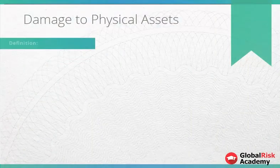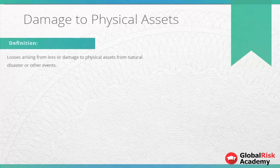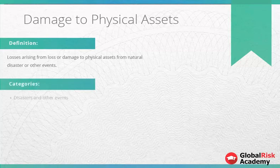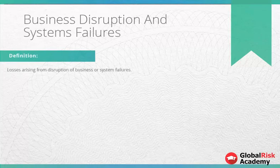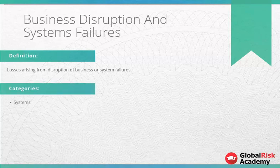Damage to physical assets is defined as losses arising from loss or damage to physical assets from natural disaster or other events. This may include natural disaster losses or human losses from external sources such as terrorism or vandalism. The risk of business disruption and system failures is about losses arising from disruption of business or system failures, usually failure of hardware, software, telecommunications, or utility outage and disruptions.